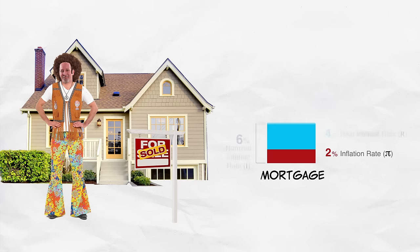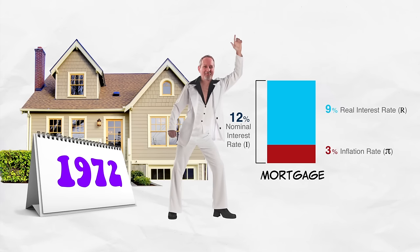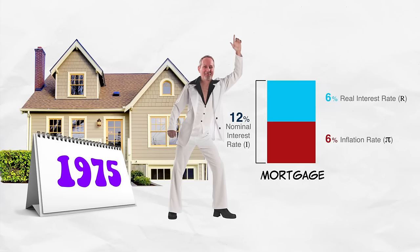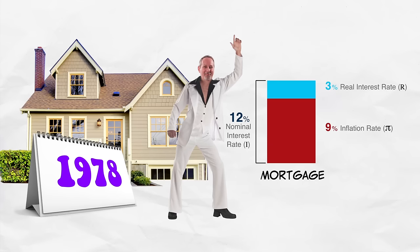Suppose, for example, that you had taken out a mortgage in the 1960s. As a borrower, you'd have done really well, because few people anticipated the high inflation rates of the 1970s. So borrowers ended up paying off their mortgages in dollars that were worth less than anyone had expected.